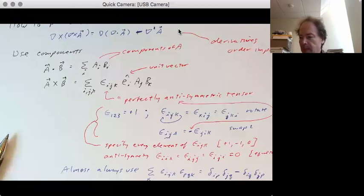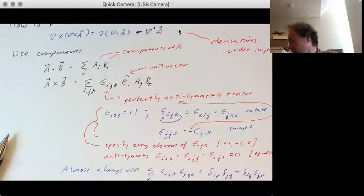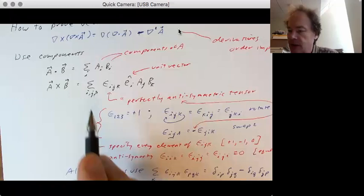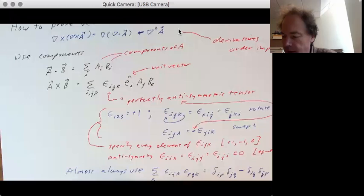That's going to show up in almost every single proof that we use. Okay, so now let's think about the case at hand. So if we write out, start with the left side, right? Del cross del cross a.